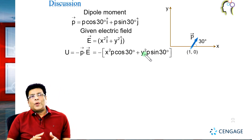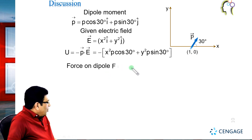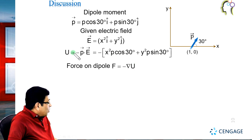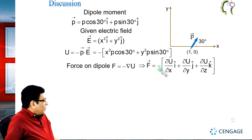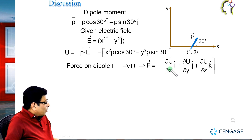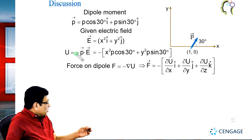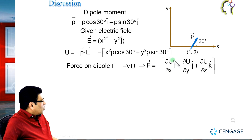Now, coming to the force: force on the dipole is equal to the negative gradient of the potential energy. So we can write F = −∇U, which means the negative partial derivative of the potential energy. Since the electric field is confined in the x and y directions with no z component, we write F = −(∂U/∂x î + ∂U/∂y ĵ).